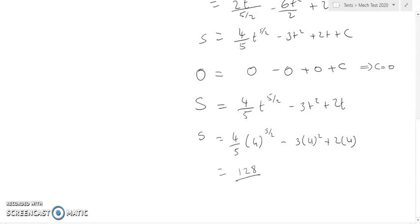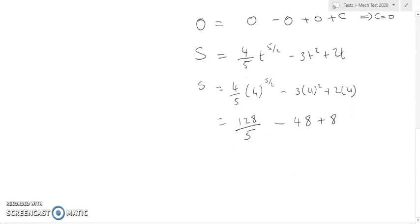128 over 5 minus 4 squared is 16 times 3 is 48 plus 8. So I'm getting minus 72 over 5 meters.